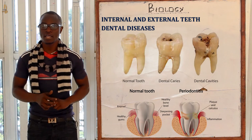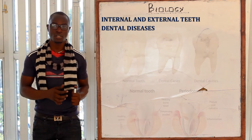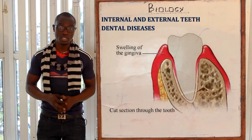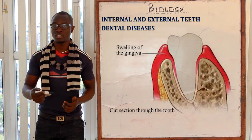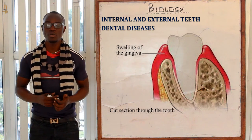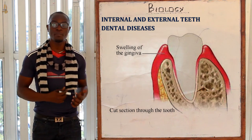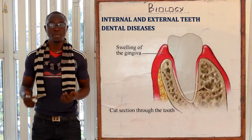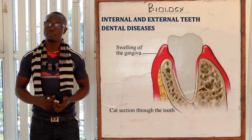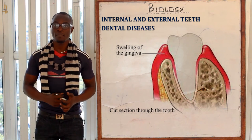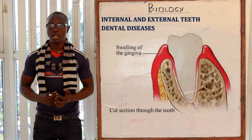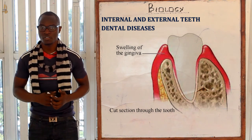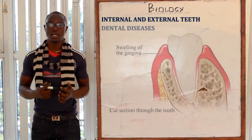Another opportunistic disease is gingivitis, which is mainly the inflammation of the gums. The gums may become red, they may swell, they may bleed, and pus may ooze out of the gums.